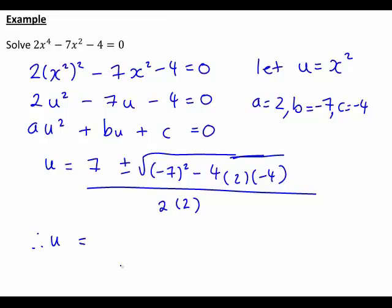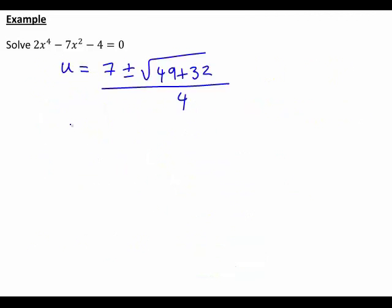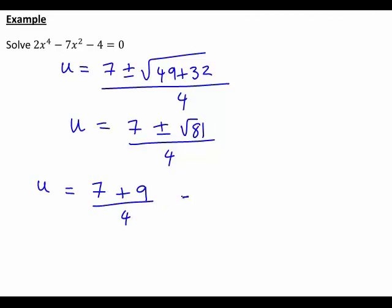Therefore, u is equal to 7 plus or minus the square root of 49 plus 32, divided by 4. So that's going to simplify down to give us u is equal to 7 plus or minus the square root of 81, divided by 4, which is going to give us 7 plus... Now, square root of 81 is just 9, so 7 plus 9 on 4, which just works out to be 4, or u is going to be 7 minus 9 divided by 4, which is going to give us negative 1 half.